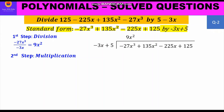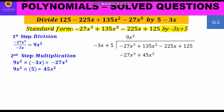We move to the second step, multiplication. We multiply the quotient 9x² with each term of the divisor: 9x² × (−3x) = −27x³, and 9x² × 5 = 45x². We write this product just below the first two terms of the dividend, making sure to align like terms below each other.